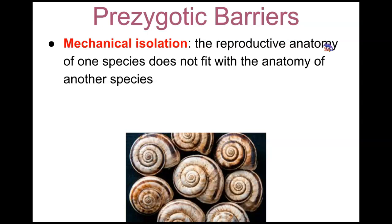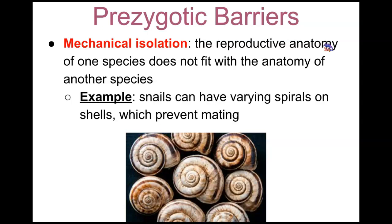Next is mechanical isolation. In mechanical isolation, the reproductive anatomy of one species does not fit with the anatomy of another species. An example: snails can have varying spirals on their shells, which ultimately can prevent mating.